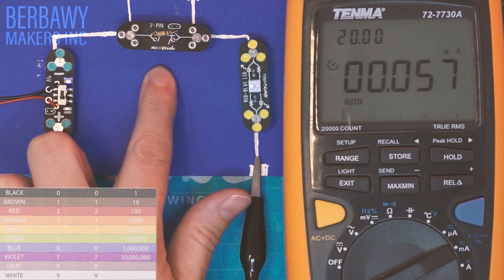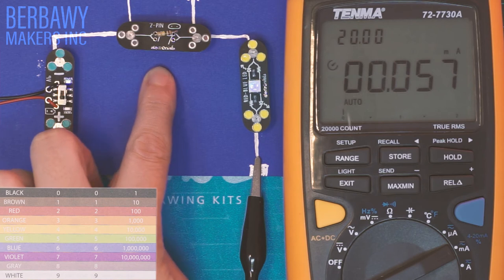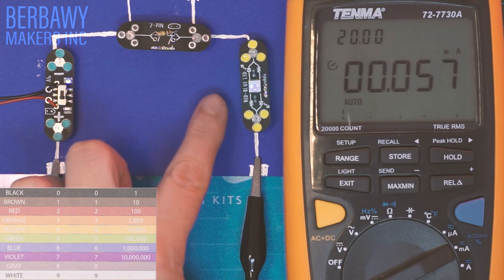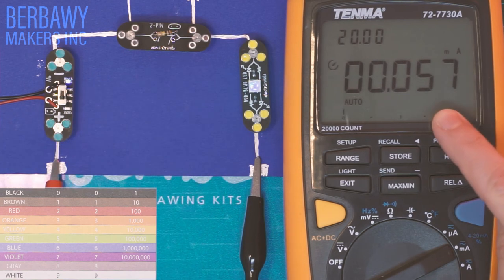This resistor is brown, black, yellow, which is 100,000 ohms. This resistor is equivalent to the highest setting in the dimmer module, the most resistance, so the least amount of current. Our LED is pretty dim, and we have 0.57 milliamps.